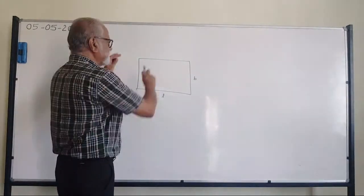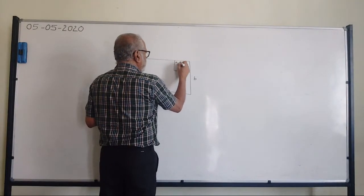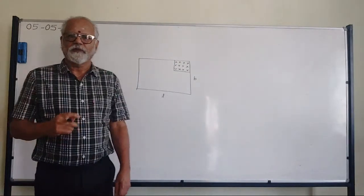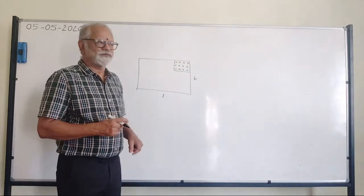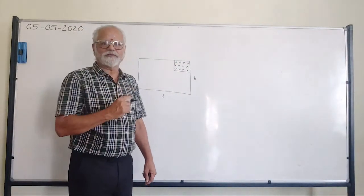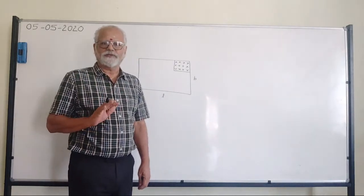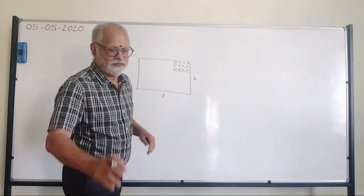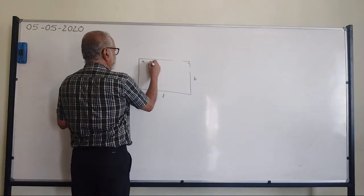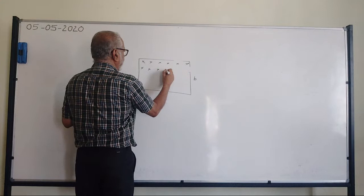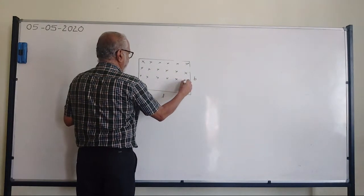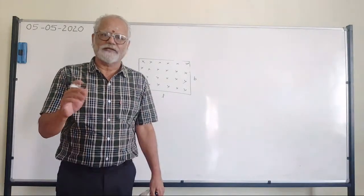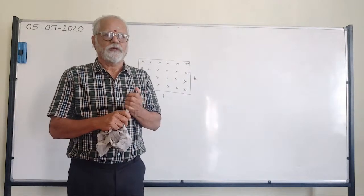Suppose this frame is placed in a uniform magnetic field — perpendicular and towards the board. Here also, you have to consider only the area through which the magnetic field lines actually pass. If the rectangular frame is placed directly in a uniform magnetic field, then you consider the entire area of the rectangle. Effective area is very, very important throughout this chapter — particularly in self induction and mutual induction, which we are going to study.